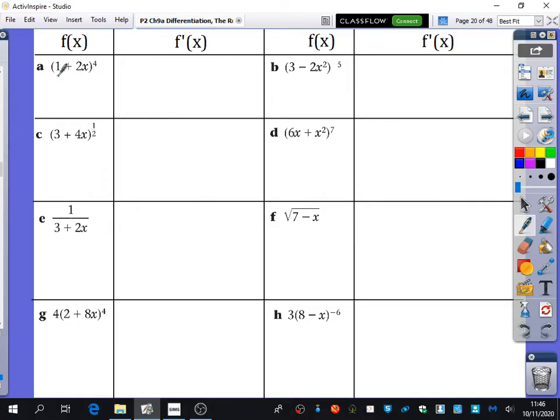I have got blah to the power of 4, and I know that blah to the power of 4 would differentiate to, I'd pull the power down of blah, and I'd decrease the power to 3, and I would have to multiply by the derivative of blah.